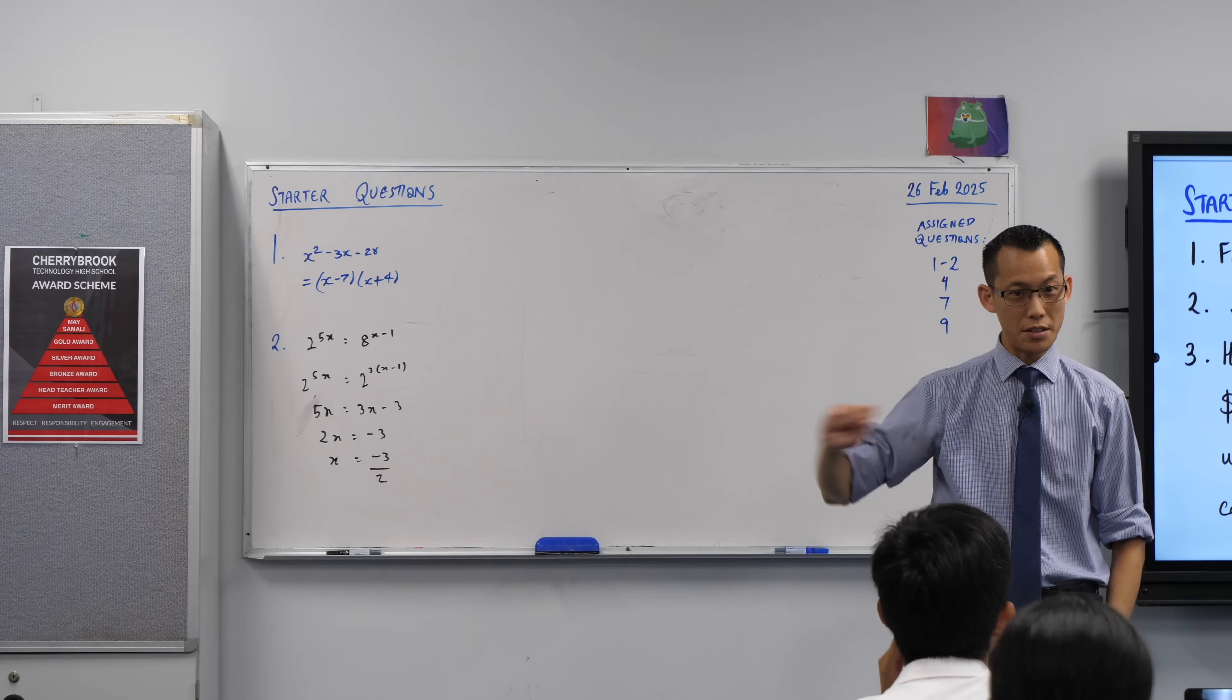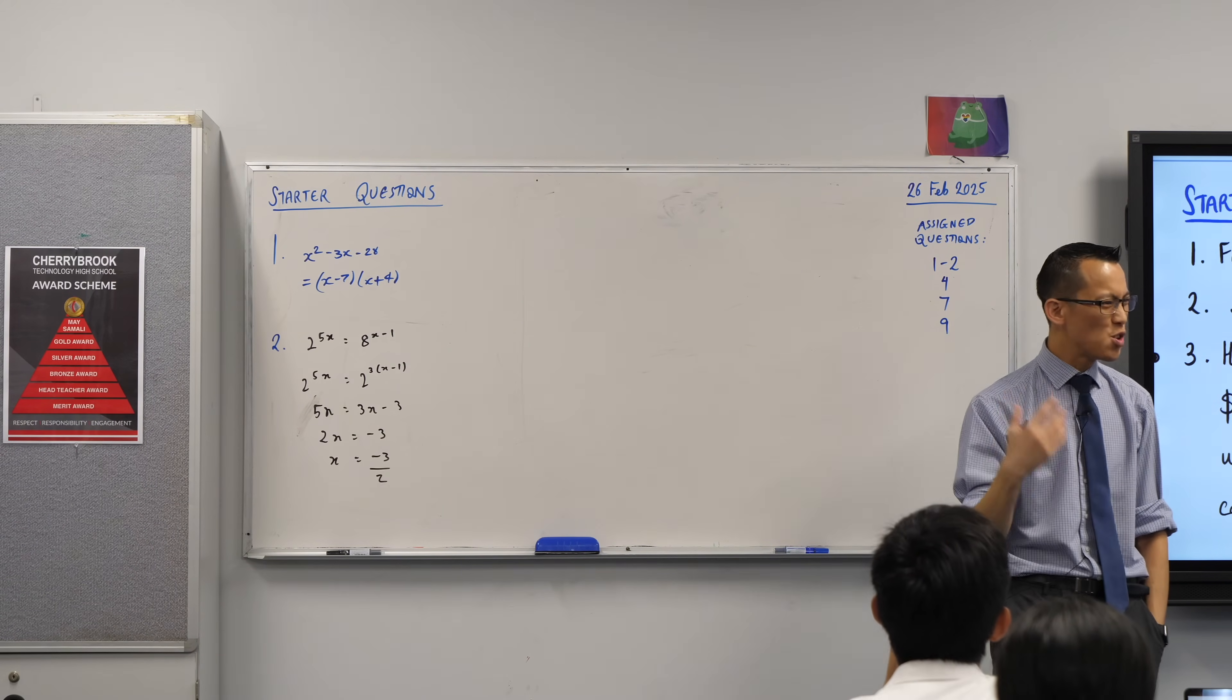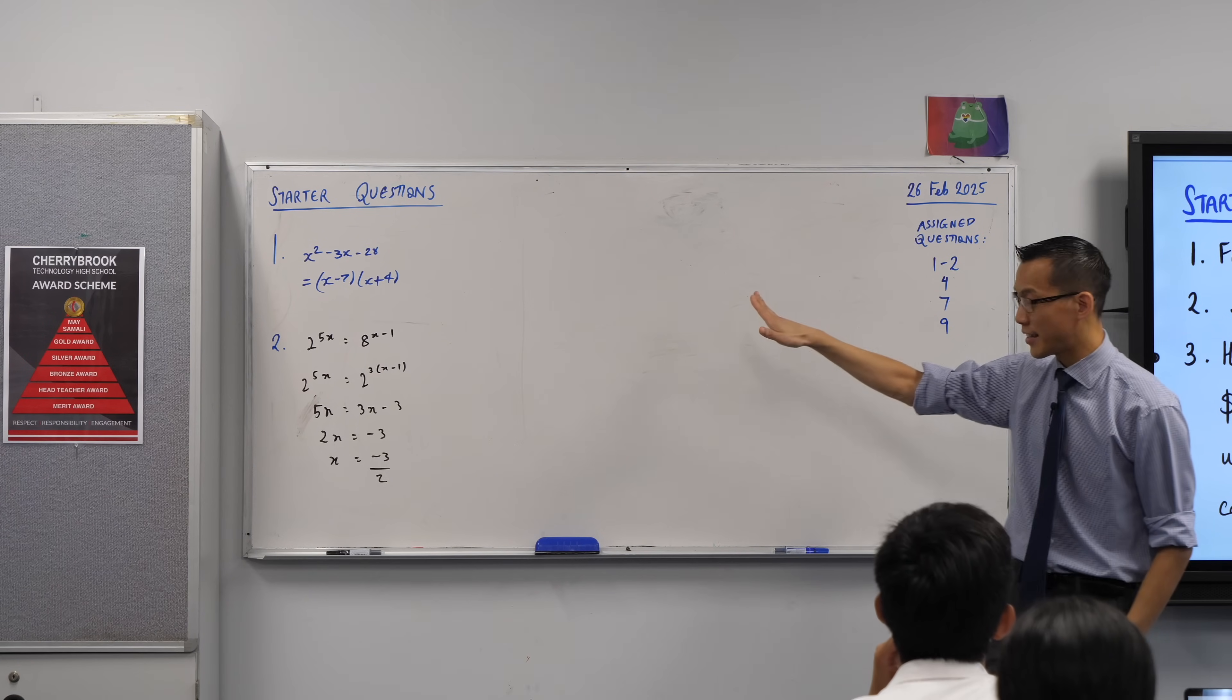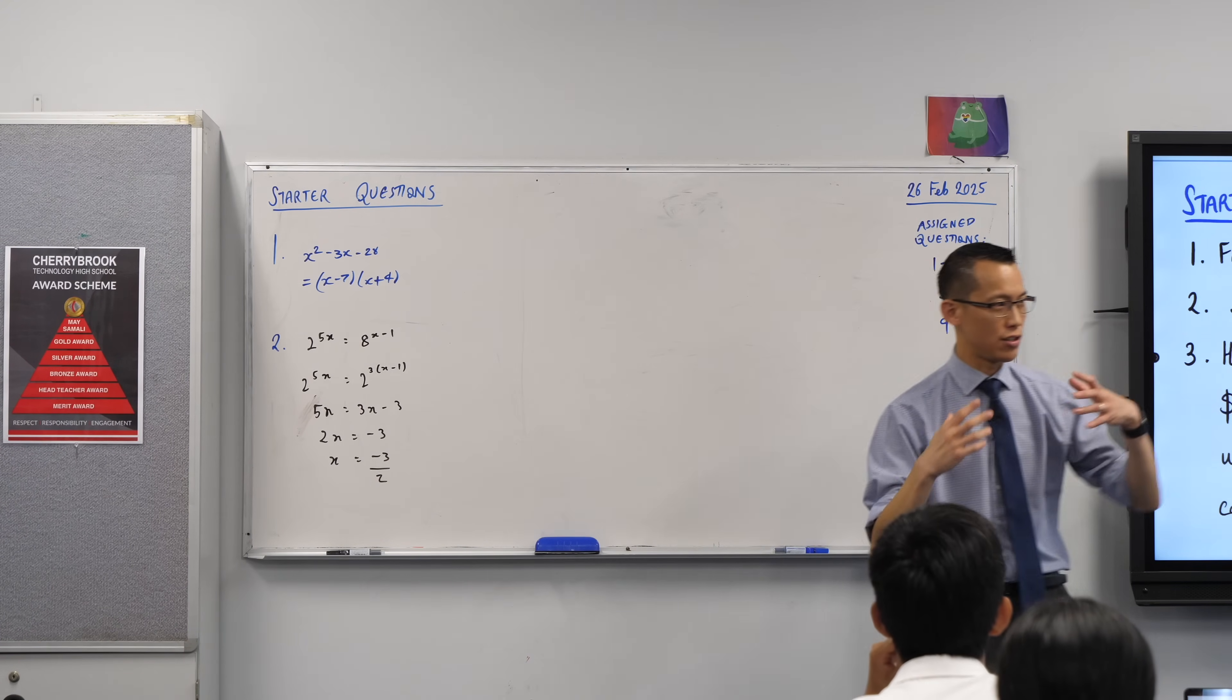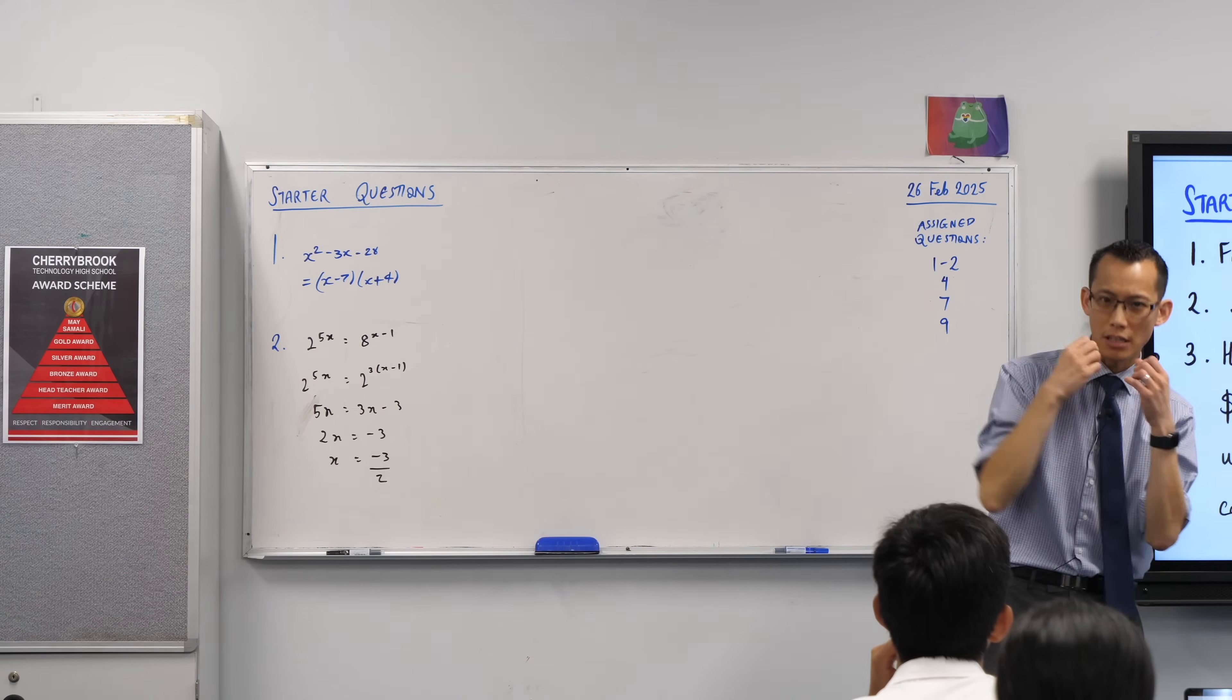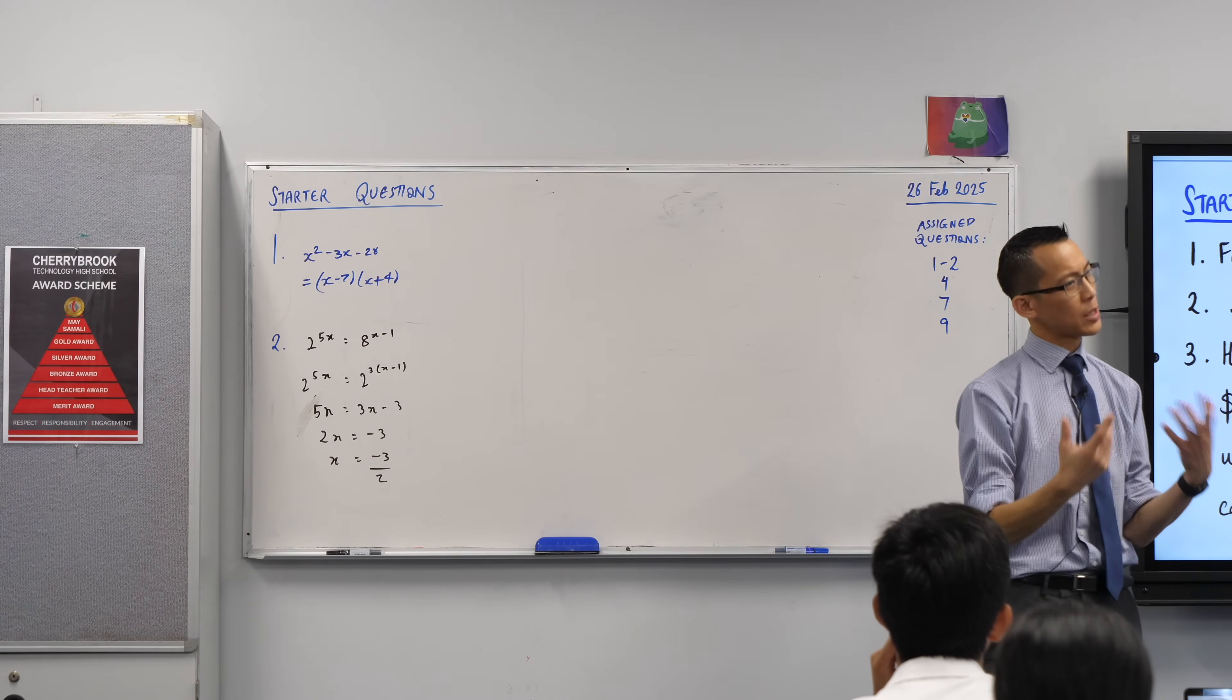Wanted to start off nice and gentle with question one. This is the kind of thing which hopefully we get to a point where you can do a question like this kind of automatically, almost without thinking. You look at it and just like if I said to you five times four, you don't have to start calculating, you involuntarily think of 20. The answer comes instantly. That's what we call fluency.